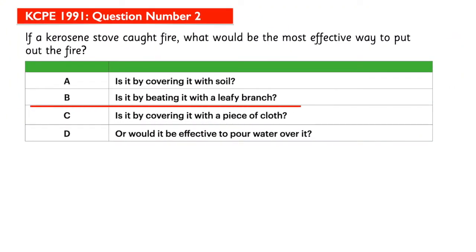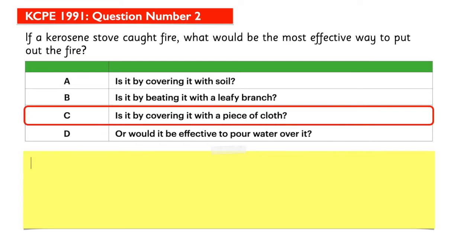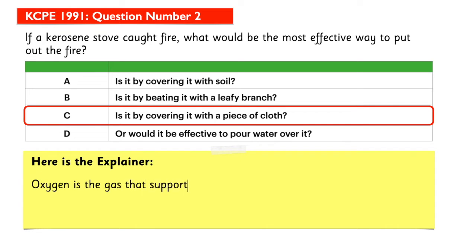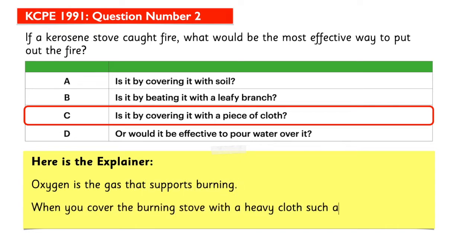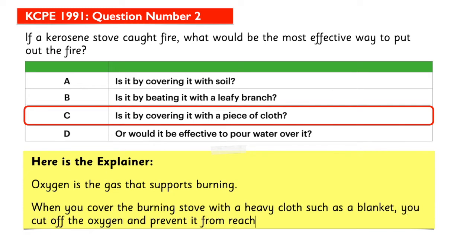The answer is C. Here is the explainer: oxygen is the gas that supports burning. When you cover the burning stove with a heavy cloth such as a blanket, you cut off the oxygen and prevent it from reaching the fire. This puts out the fire.